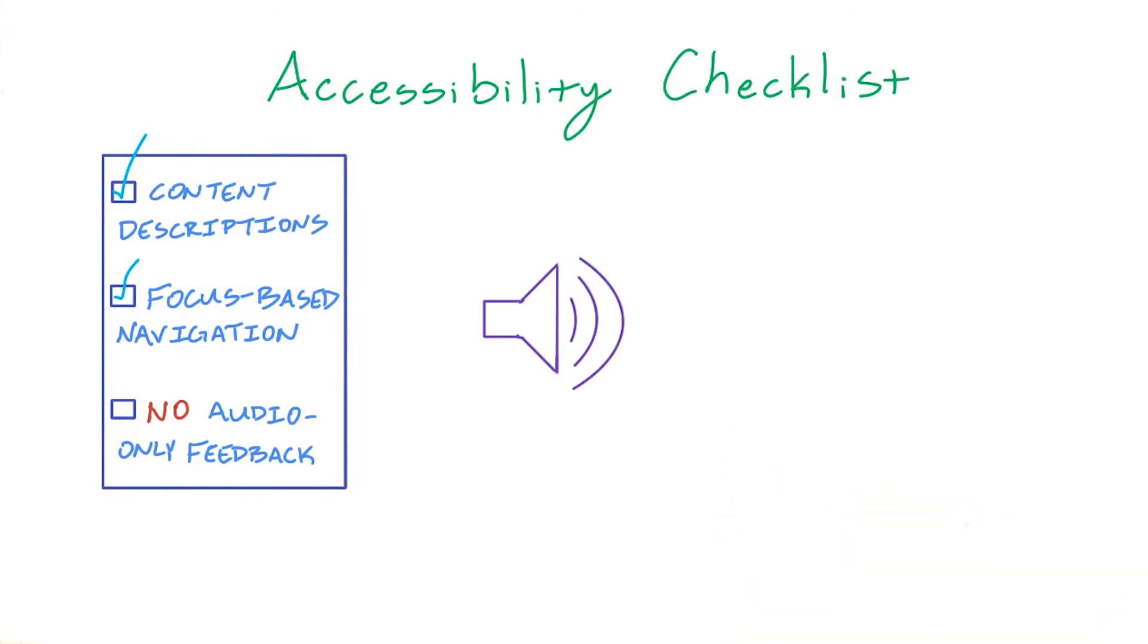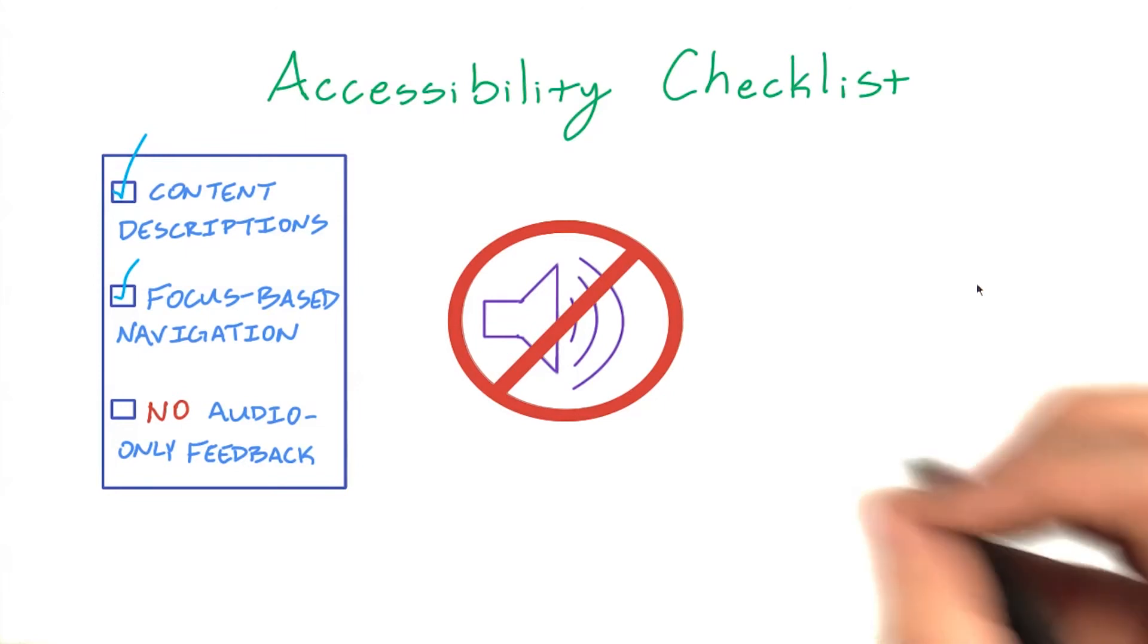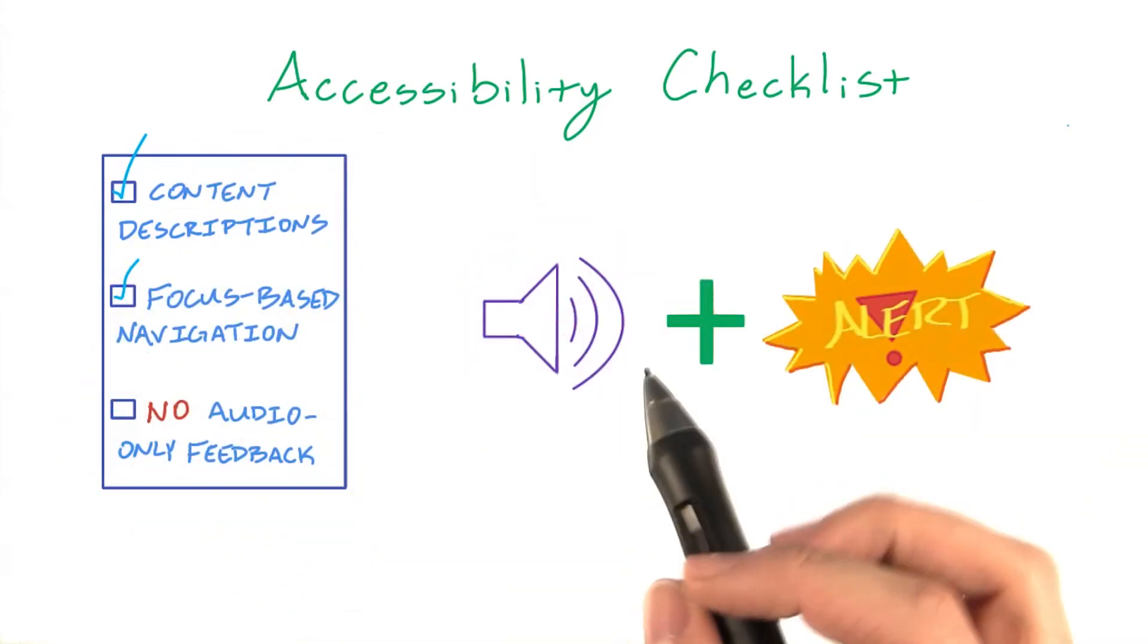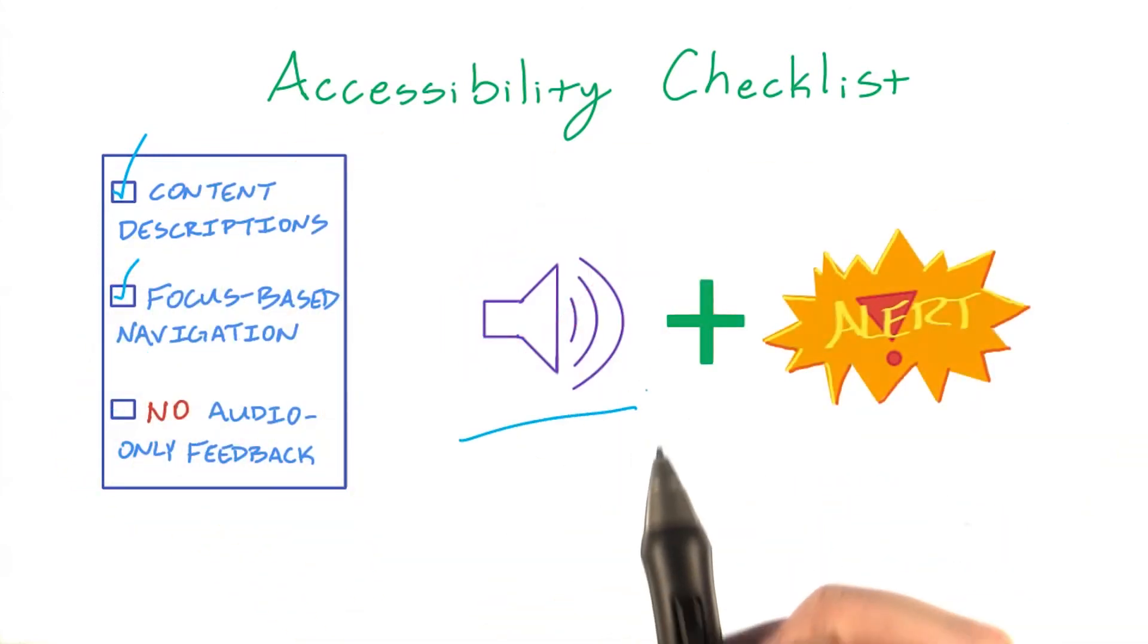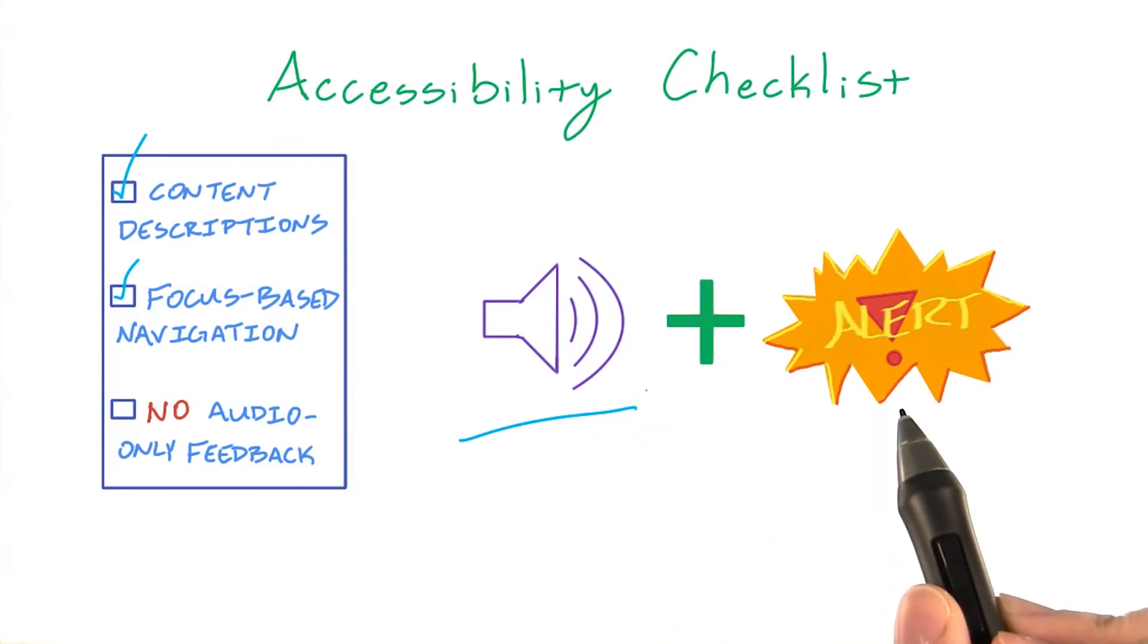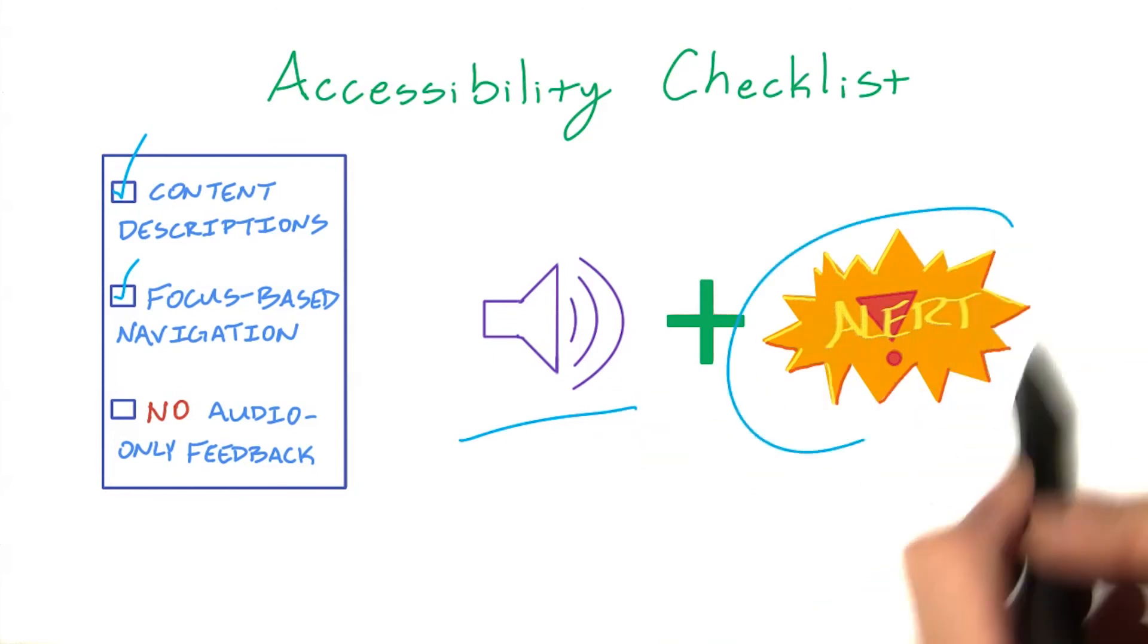Finally, audio feedback must always have a secondary feedback mechanism to support users who are deaf or hard of hearing. For example, a sound alert for the arrival of a message must be accompanied by a system notification, haptic feedback, or some other visual cue.